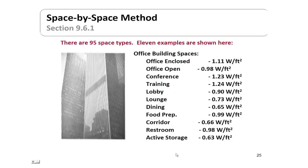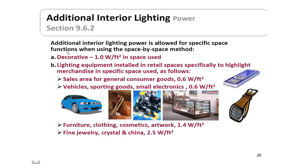There are allowances for additional interior lighting. Decorative lighting is allowed another 1 watt per square foot in the space used. For retail spaces highlighting merchandise, the additional allowances are: 0.6 watts per square foot for general consumer goods and vehicles; 1.4 watts per square foot for furniture, clothing, cosmetics, and artwork; and 2.5 watts per square foot for fine jewelry, crystal, and china — quite an increment over the base allowance.